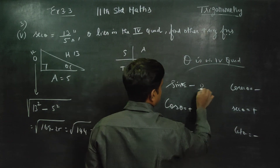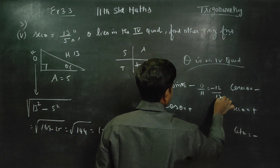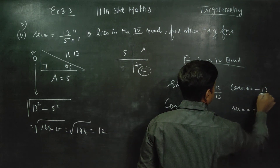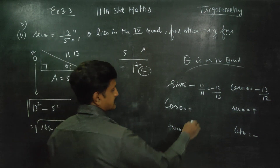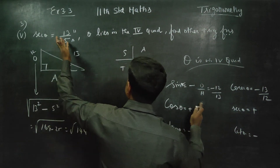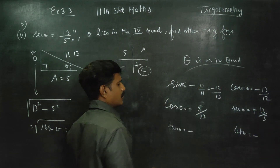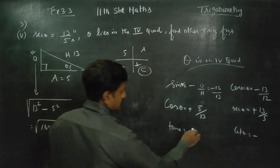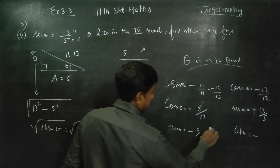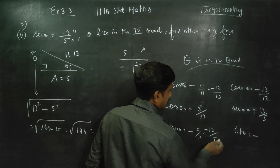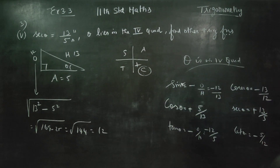Sin theta is opposite by hypotenuse, so sin theta equals minus 12 by 13. Cosec theta is minus 13 by 12. Cos theta is adjacent by hypotenuse, so cos theta equals 5 by 13, and secant theta is 13 by 5. Tan theta is opposite by adjacent, so tan theta equals minus 12 by 5. Thank you.